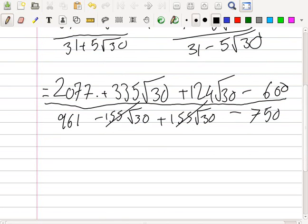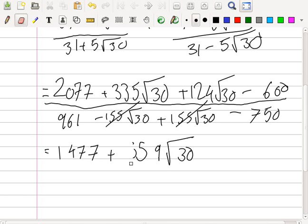Right. 2077 minus... Oh, what was this? This was 600, wasn't it? So, that's equal to 1477. And then 335 plus 124. So, that's a 9... 359? Root 30? What? No. No, 4. No, 4. 459. 459 root 30. Yeah. For these two added together? Yeah. All over 961 minus 750. So, what's it? 241? 241, is it? No, 211. I'm tired. It's a long day.